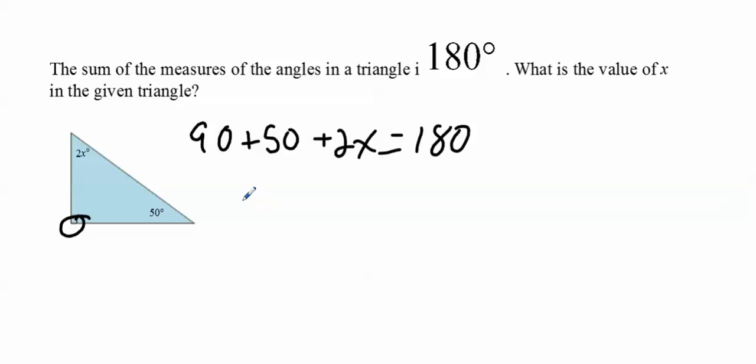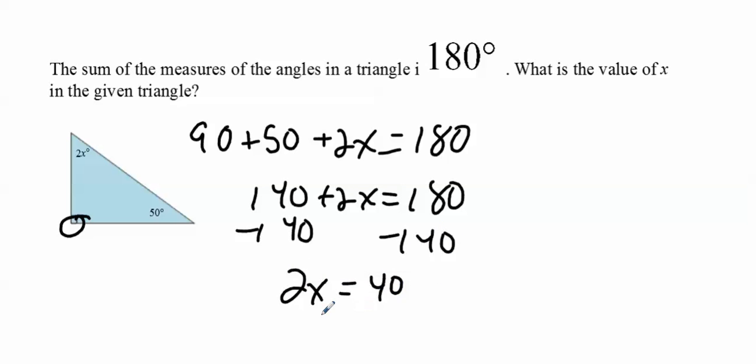So with this one, you're going to add the 90 and the 50, so that's 140 plus 2X equals 180. So you subtract 140 from both sides. So you get 2X equals 40. Divide both sides by 2. So, X is 20. Seemed pretty simple, right?